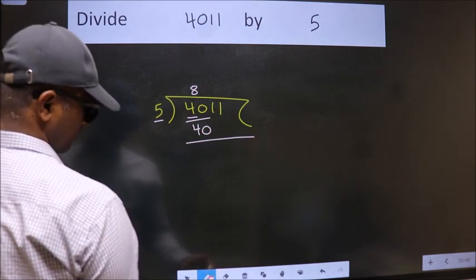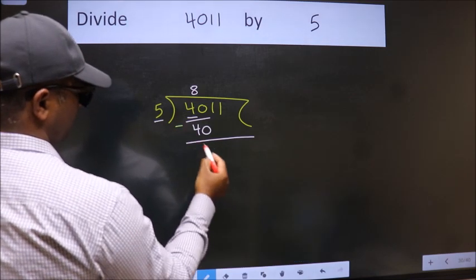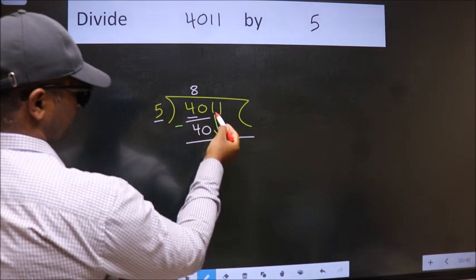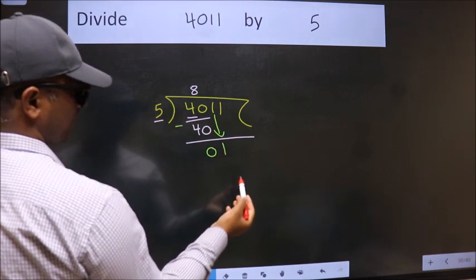Now we should subtract. We get 0. After this, bring down the beside number. So 1 down.